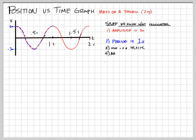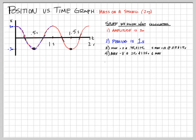Maximum negative velocity is when we're passing through equilibrium on the way down — at 0.25 s and 1.25 s. Maximum positive acceleration happens at 0.5 s and 1.5 s — that's the bottom of our path. Maximum negative acceleration happens at 0 s, 1 s, and 2 s. Those are all the things we can know without calculating, just by analyzing the position versus time graph.